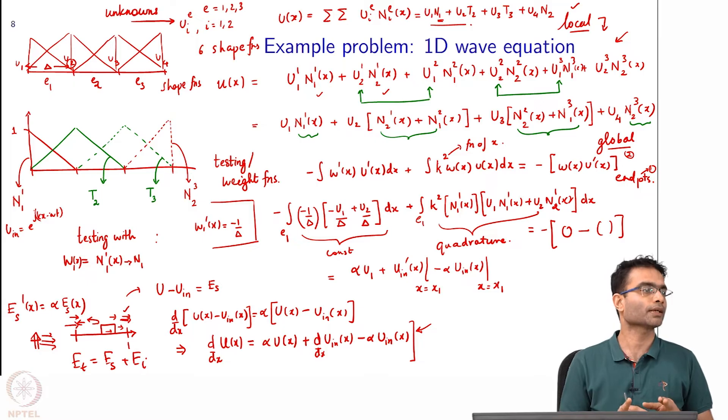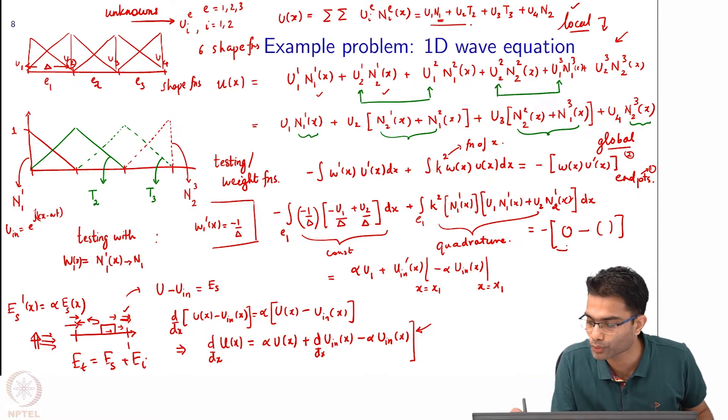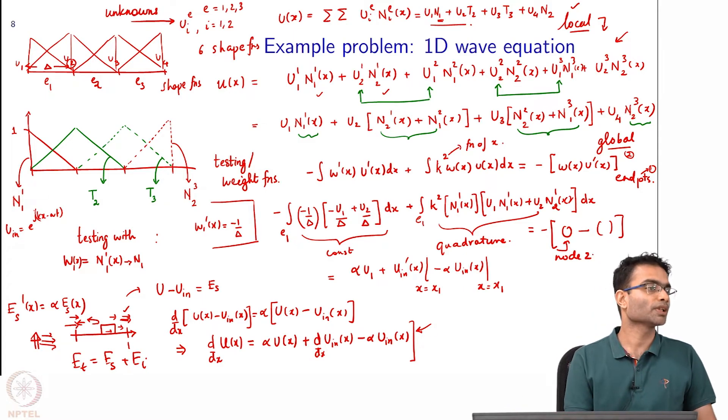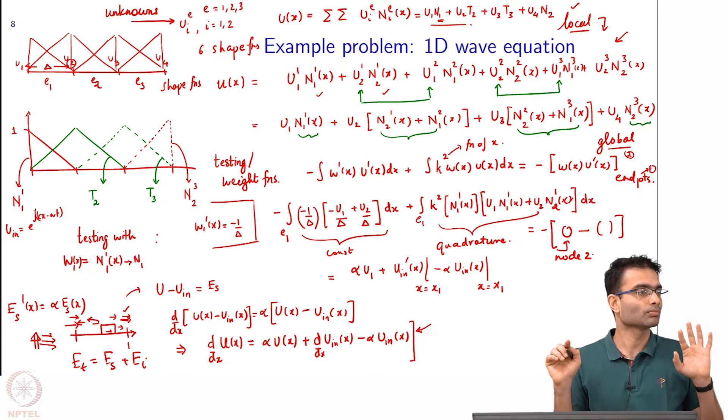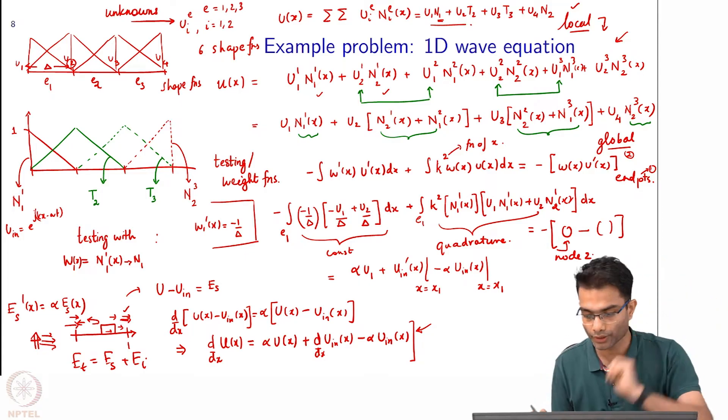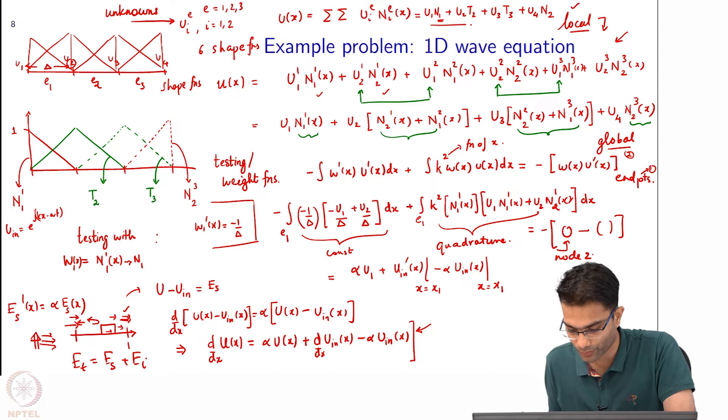This is the only complication that appears at the boundary points. You notice that the contribution from node 2 was 0. Similarly, you will find that the contribution from interior nodes becomes 0. What you are left with is just this contribution from the end point.